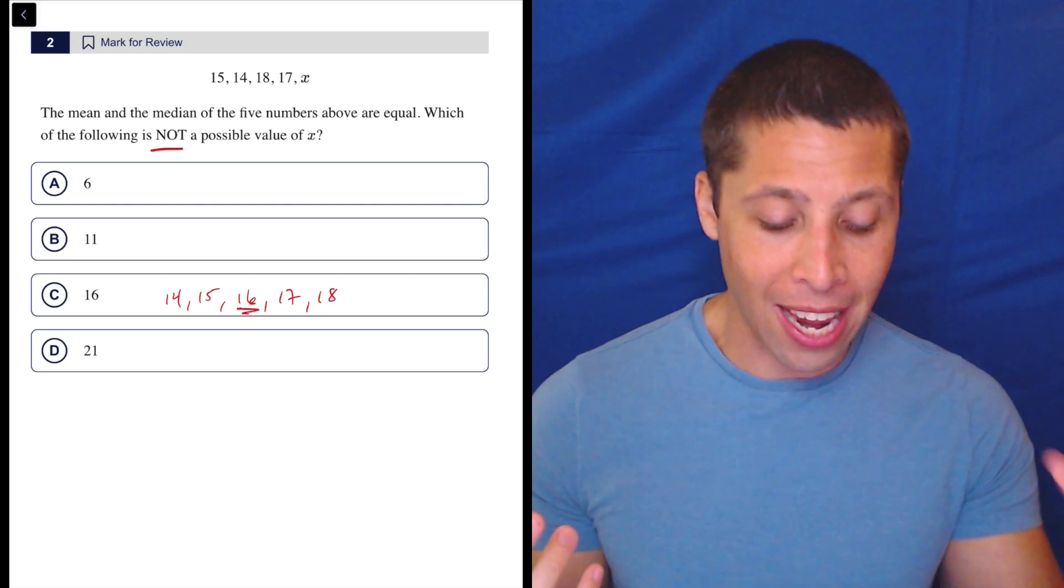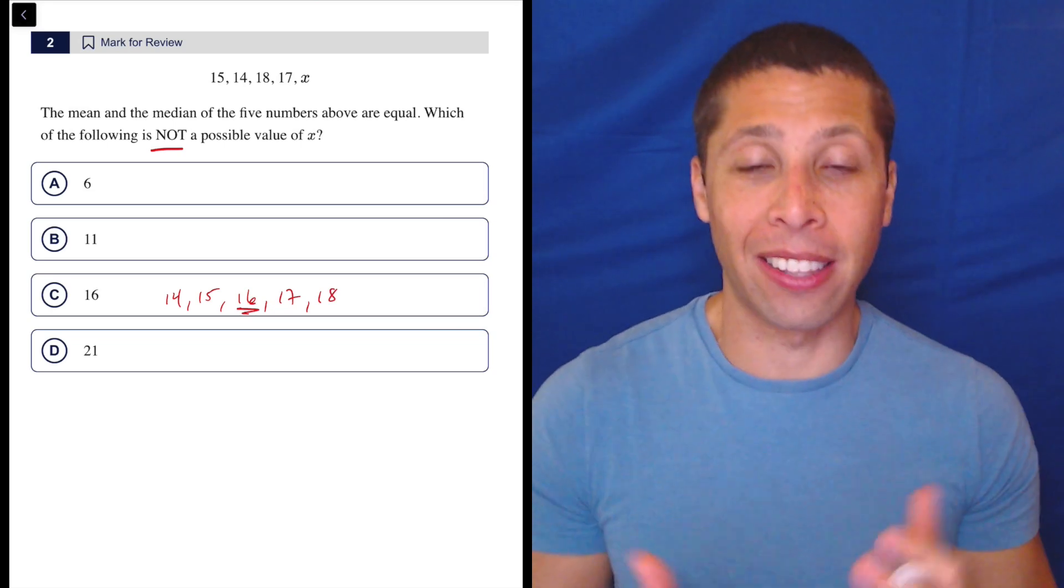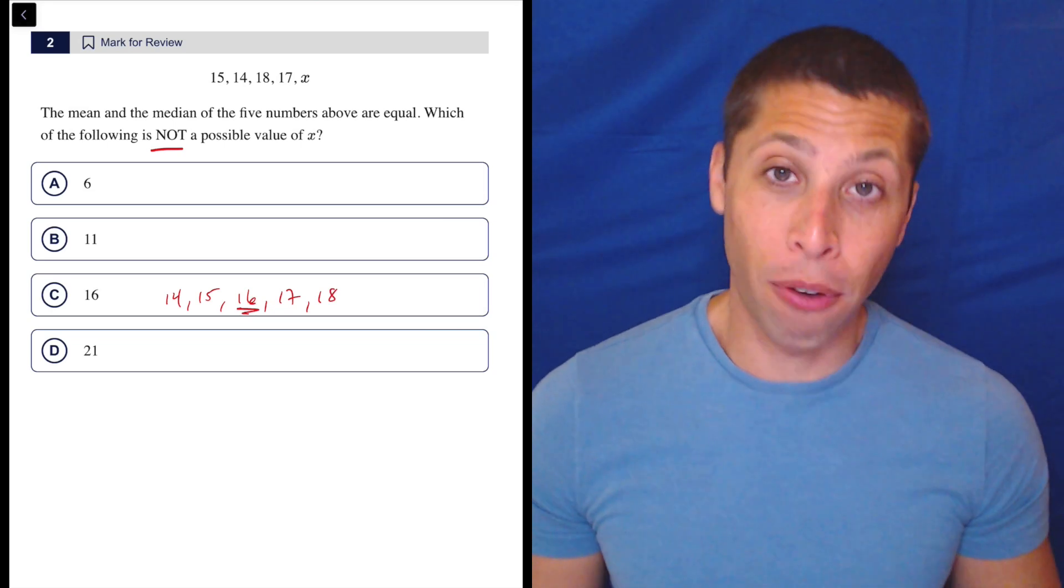It's almost like the 14 and the 18 are kind of evening things out on the scale, and the 15 and the 17 are evening things out. They're the same distance from the middle.